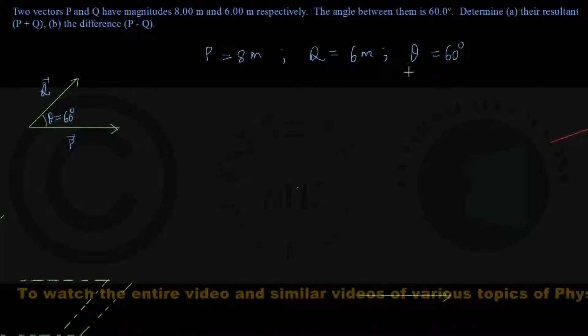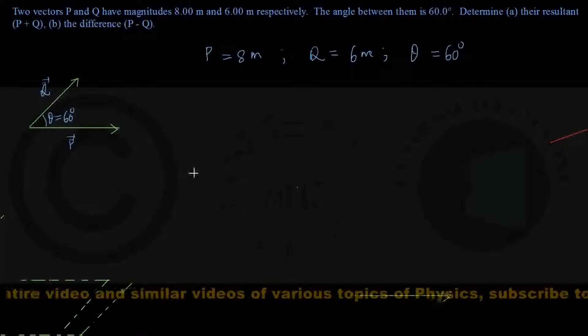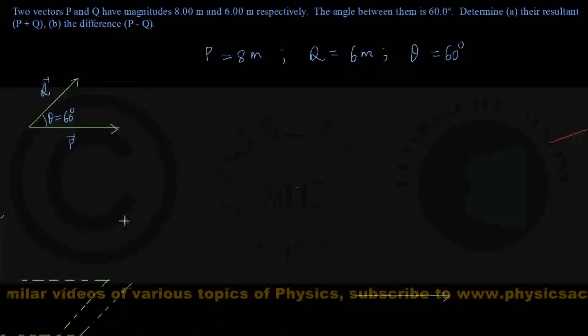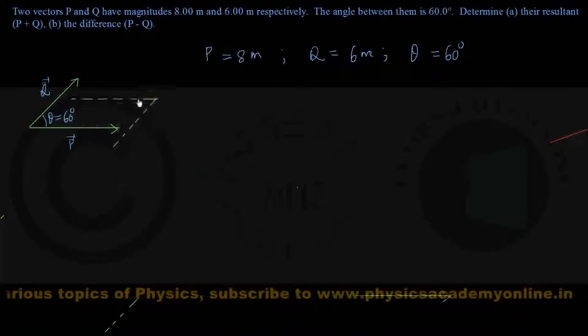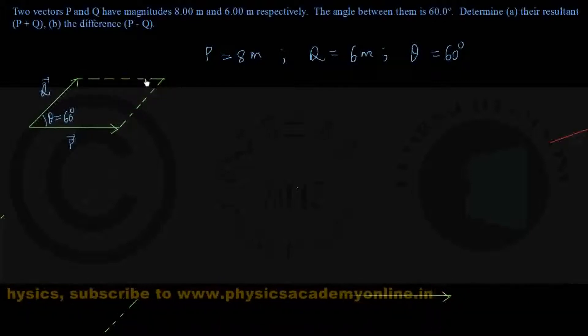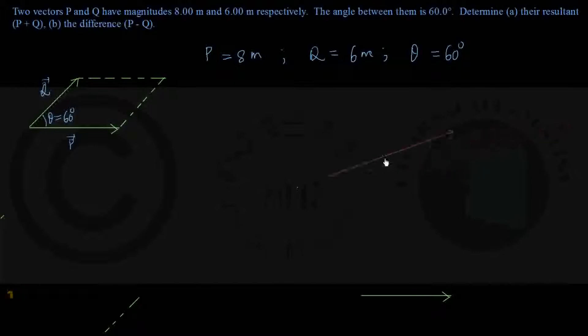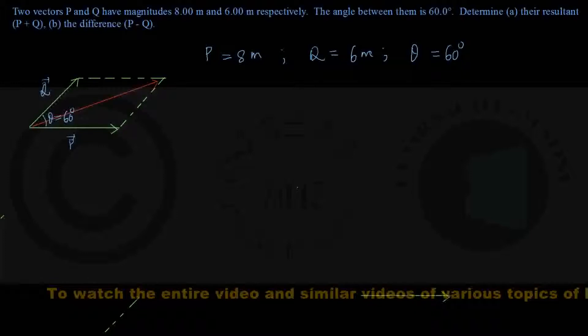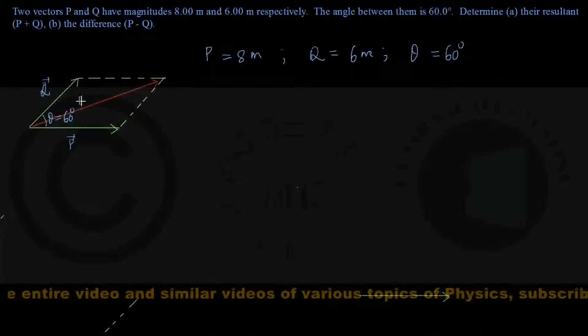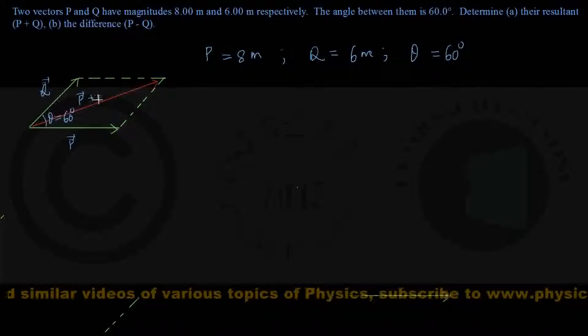Next we construct the parallelogram and draw the diagonal to the common point. The resultant P plus Q, also called the vector sum, is given by this red arrow—the diagonal of the parallelogram passing through the common tail of P and Q. This is P plus Q.